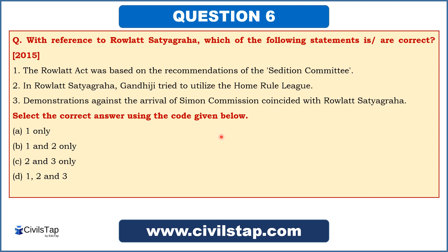This question came in the prelims of 2015: 'With reference to Rowlett Satyagraha, which of the following statements are correct?' First: the Rowlett Act was based on the recommendations of the Sedition Committee. Second: in Rowlett Satyagraha, Gandhiji tried to utilize the Home Rule League. Third: demonstrations against the Simon Commission coincided with Rowlett Satyagraha. The Simon Commission came in 1927, while Rowlett Satyagraha happened in 1919 — so statement three cannot be correct, which you can verify once you cover the whole history through the lecture series.